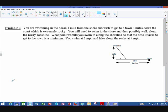In this example, you are swimming in the ocean one mile from the shore and wish to get to a town three miles down the coast, which is extremely rocky. You'll need to swim to the shore then possibly walk along the rocky coastline. At what point would you swim to along the shoreline so that the time it takes to get to the town is a minimum? You swim at two miles per hour but hike along the rocks at four miles per hour. It's a really important facet of this problem that we understand the feasible domain.